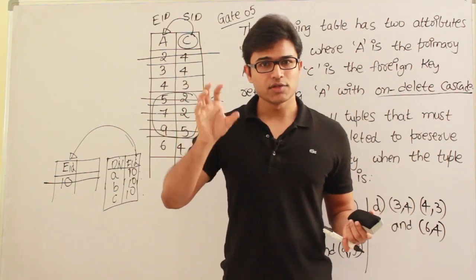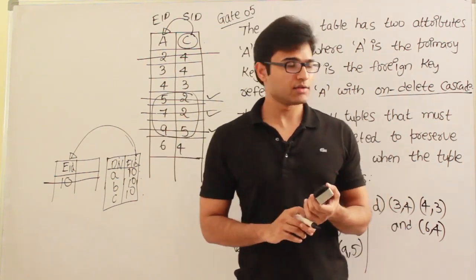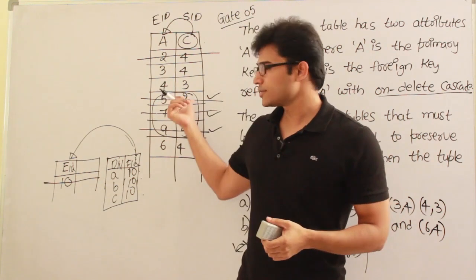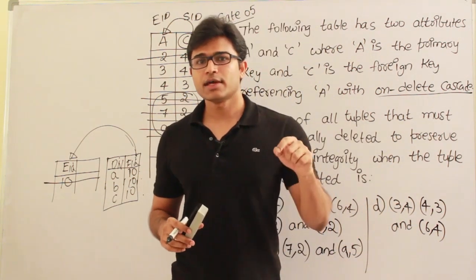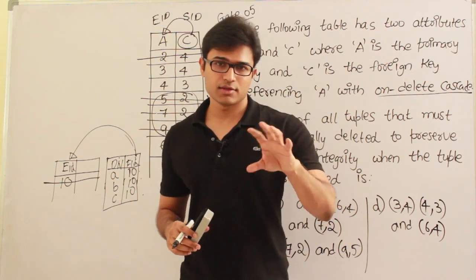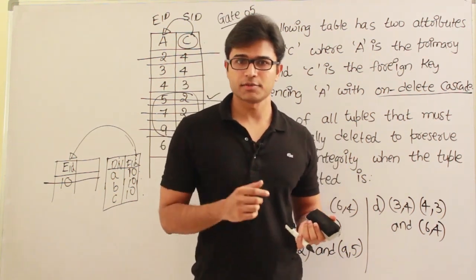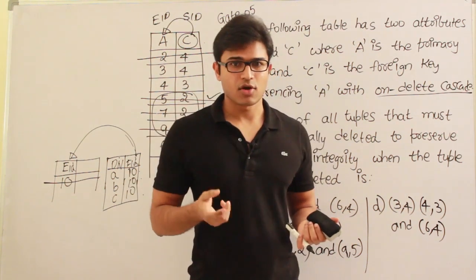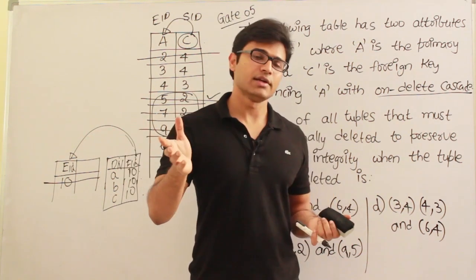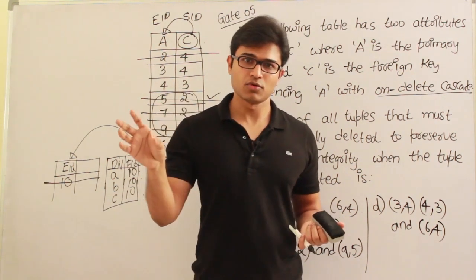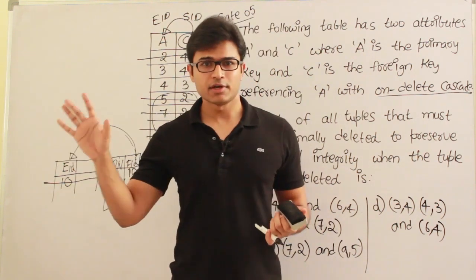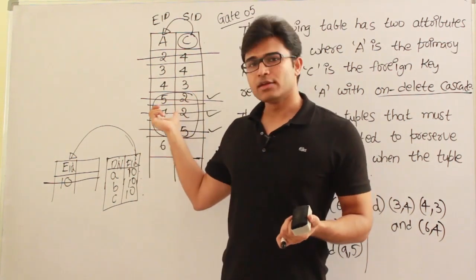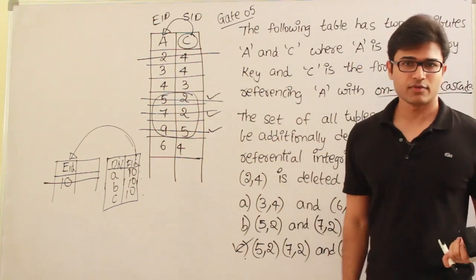Once these constraints are specified, the software will act accordingly. If you specify on delete cascade, it will do all the deletions. If you specify on delete nullify, it will put all values null. For each table, you can specify a separate rule — it doesn't mean you have to specify only one rule for all tables in the database. Depending on the meaning, you should take the meaningful action. So this is the answer.